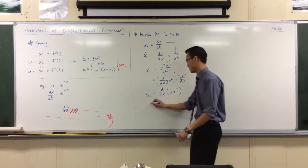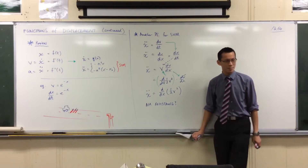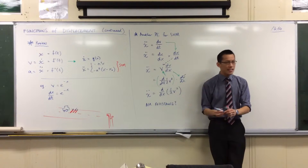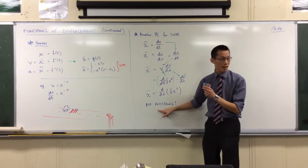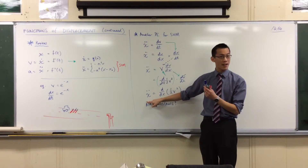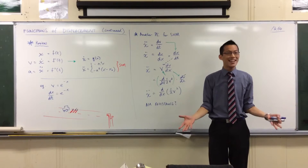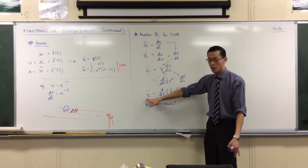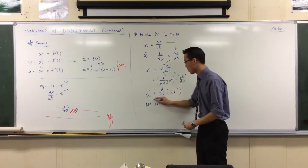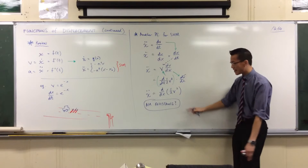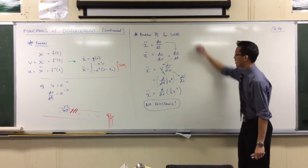Can we think of an example? Air resistance. The faster something travels through air, the more the air pushes back, resisting it — accelerating it in the direction opposite to motion. If you're standing still, there's no air resistance, no acceleration. So air resistance is a force that depends on how fast you're going, which is exactly this kind of equation.